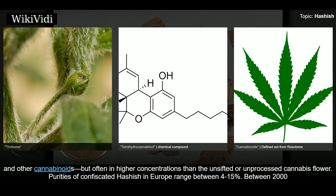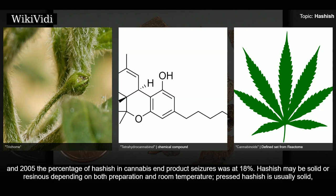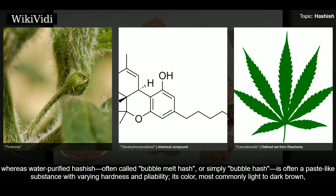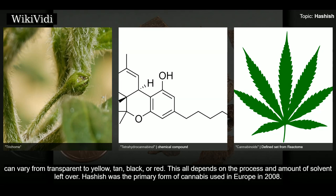Purities of confiscated hashish in Europe range between 4–15%. Between 2000 and 2005, the percentage of hashish in cannabis end-product seizures was at 18%. Hashish may be solid or resinous depending on preparation and room temperature. Pressed hashish is usually solid, whereas water-purified hashish — often called bubble hash — is often a paste-like substance. Its color, most commonly light to dark brown, can vary from transparent to yellow, tan, black, or red.